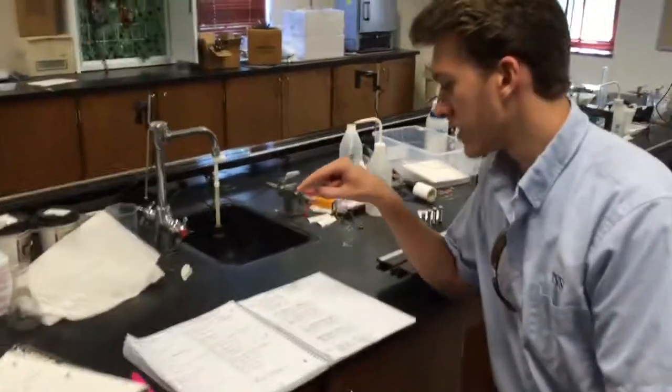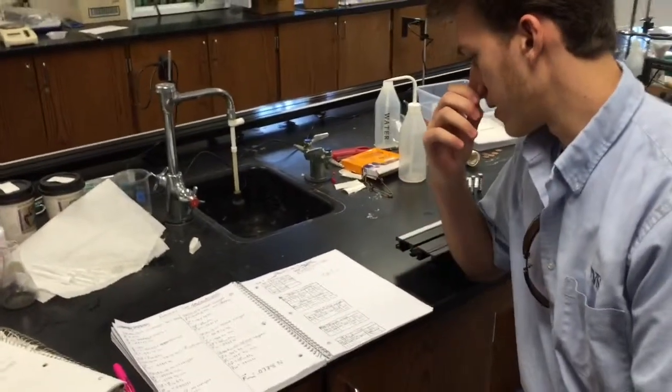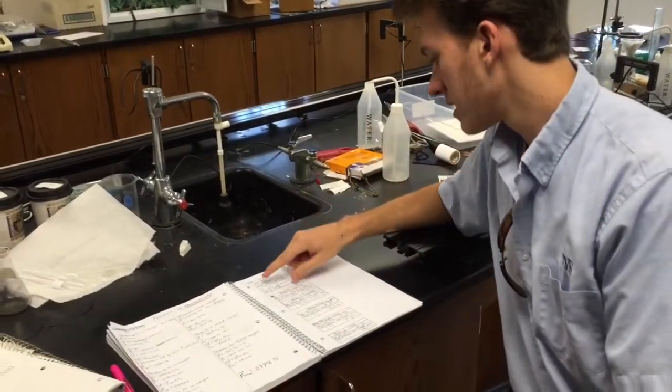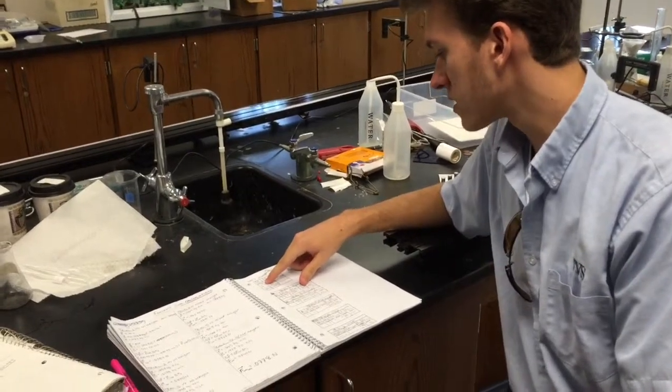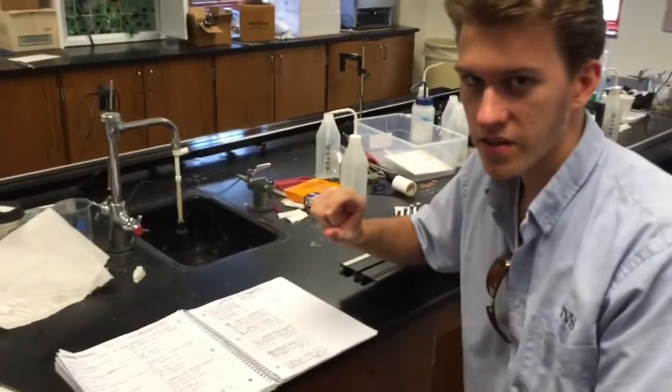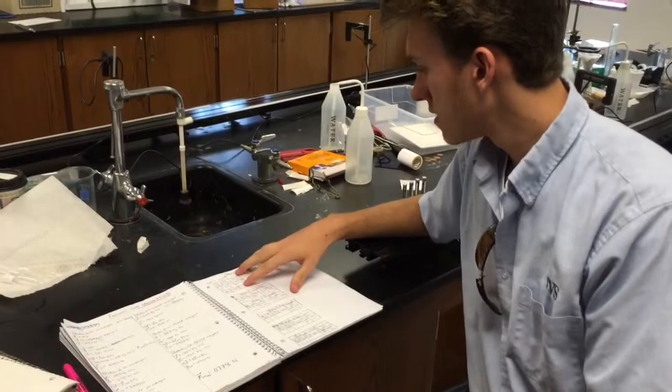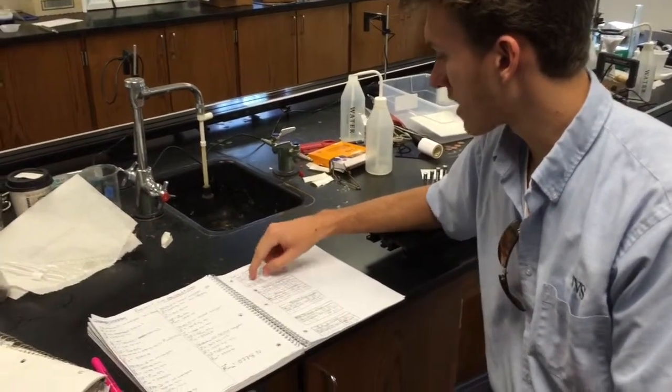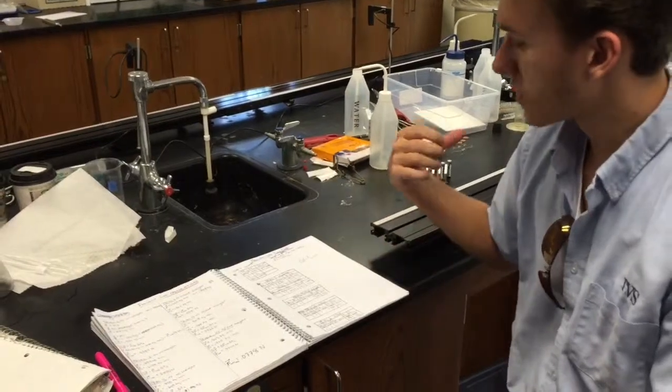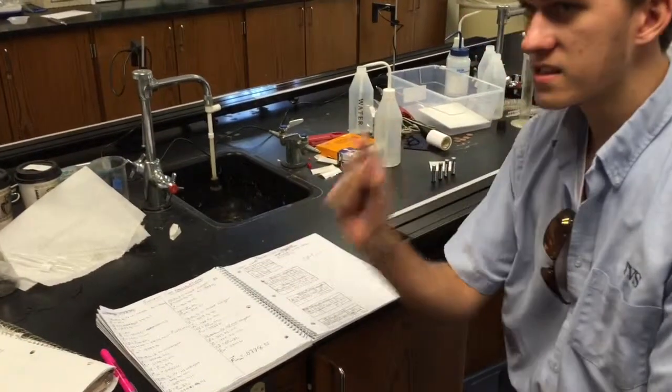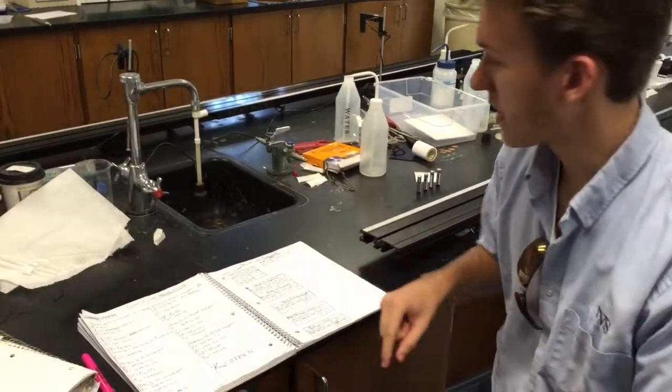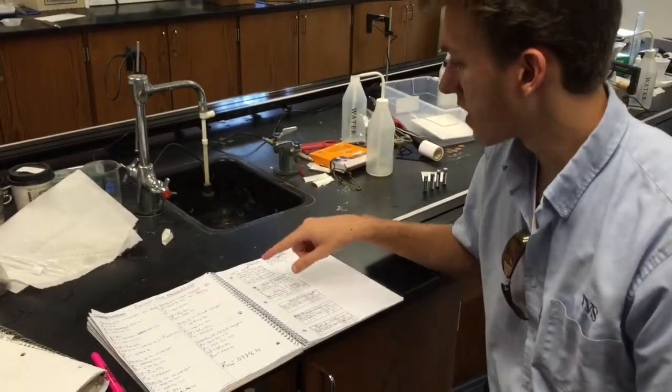So what we did with these numbers. We had the time that it took for the flag, the little flag on the fan, that flag was blocking the first photo gate. And we had the distance of the flag divided by the time that the photo gate was blocked by the flag, which gave us an initial velocity.